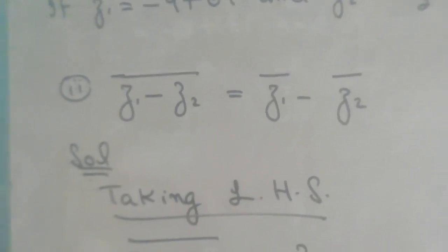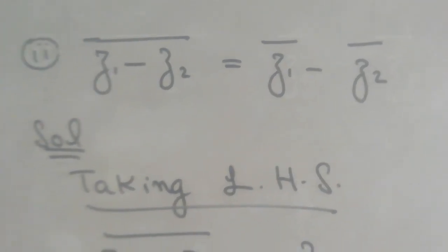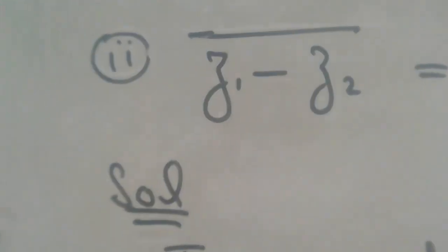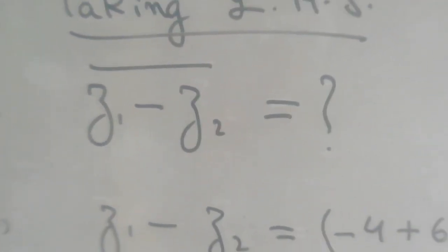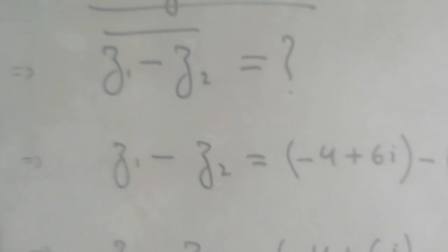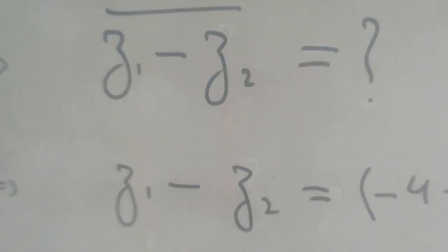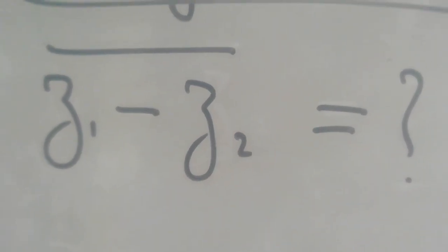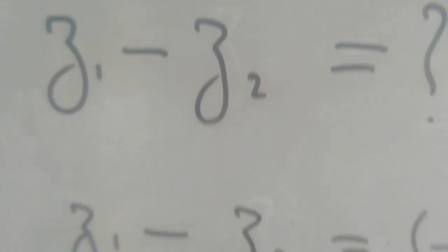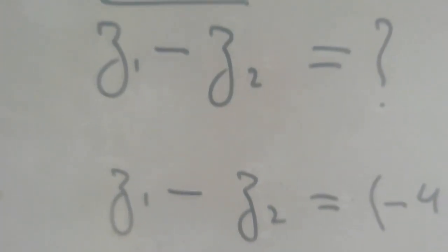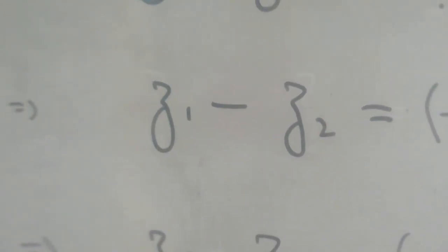For this purpose I wrote the solution. I am taking the left hand side, which is the whole conjugate of z1 minus z2. I put a question mark and place the conjugate symbol — the line — over z1 minus z2.